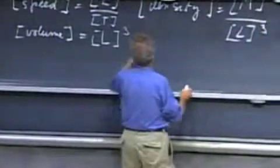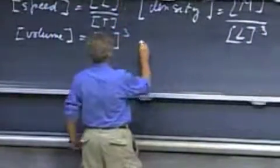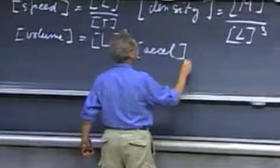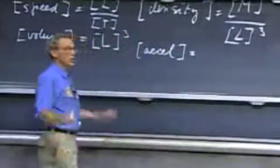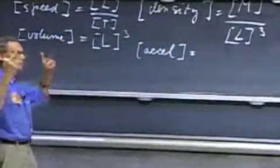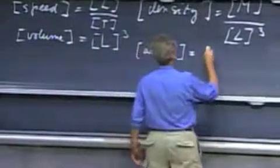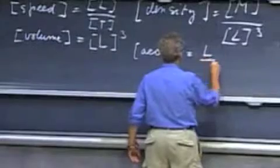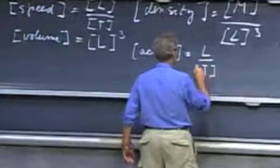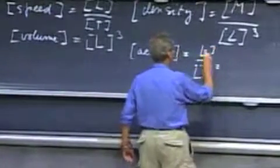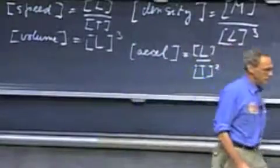Also important in our course is acceleration. We will deal a lot with acceleration. Acceleration, as you will see, is length per time squared. The unit is meters per second squared. So you get L divided by T squared. And so all other quantities can be derived from these three fundamentals.